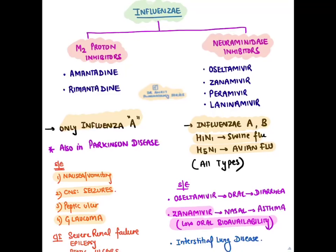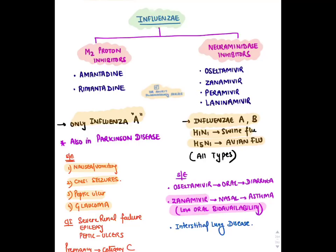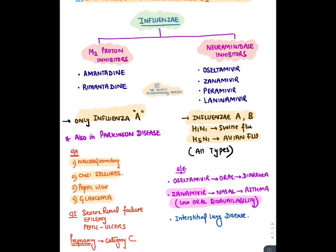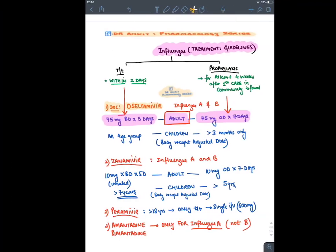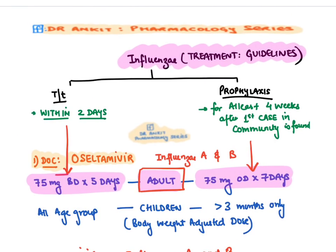Oseltamivir is oral — side effects are nausea, vomiting, and diarrhea. Zanamivir is given nasally (inhaled) due to poor oral absorption — side effect is asthma. Peramivir and Laninamivir are given parenterally. Laninamivir is the longest-acting. Common side effect: fibrosing or interstitial lung disease. For both treatment and prophylaxis of Influenza, Oseltamivir is the drug of choice. Treatment: 75 mg twice daily for 5 days; prophylaxis: once daily for 7 days. Treatment must start within 2 days; prophylaxis for at least 4 weeks after a community case.